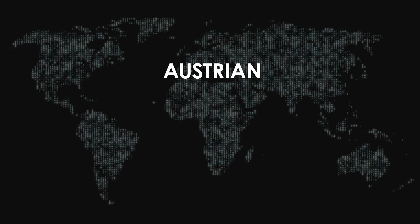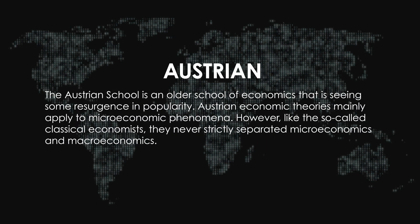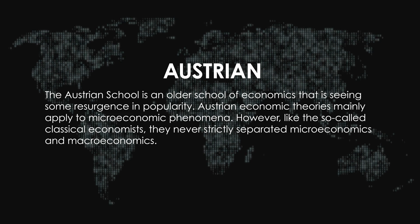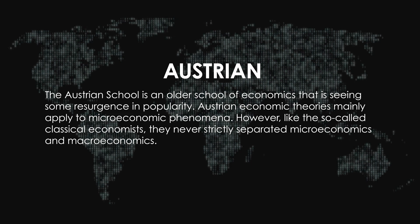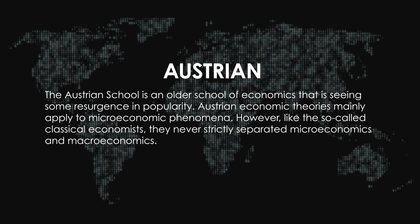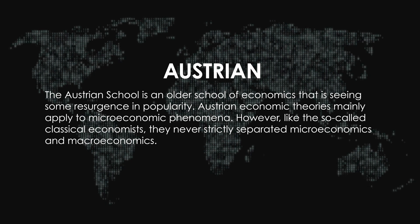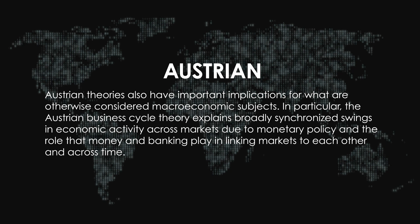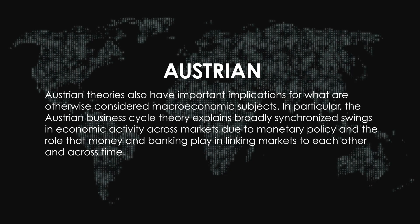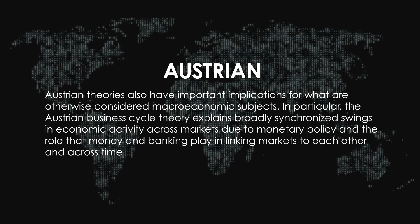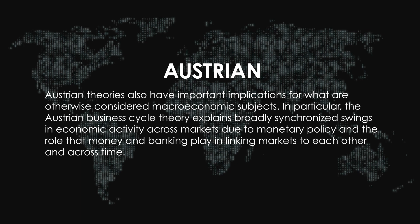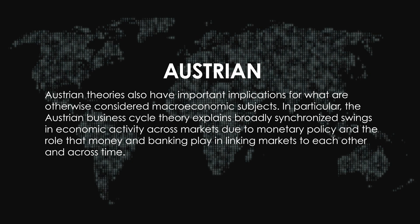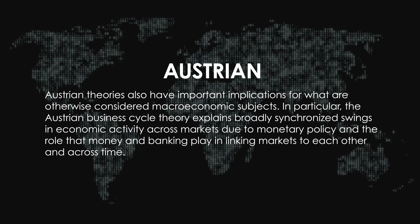The Austrian School is an older school of economics that is seeing some resurgence in popularity. Austrian economic theories mainly apply to microeconomic phenomena. However, the classical economists never strictly separated microeconomics and macroeconomics. Austrian theories also have important implications for what are otherwise considered macroeconomic subjects. In particular, the Austrian business cycle theory explains broadly synchronized swings in economic activity across markets due to monetary policy and the role that money and banking play in linking markets to each other across time.